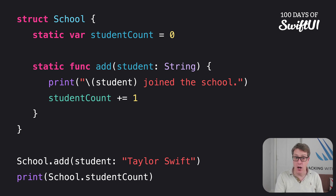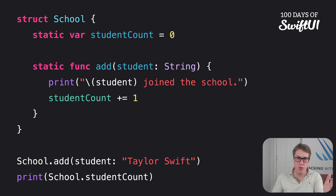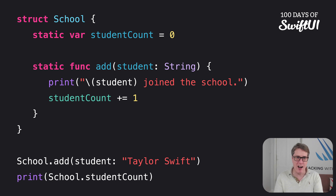This should also explain why we can modify studentCount — saying studentCount += 1 — without marking the add method as mutating. We don't need it here. We only have to have mutating as a keyword when the struct might be a constant or a variable, and there is no instance here. It's always the struct itself, never a constant or variable school to work with. So it naturally is happy to mutate.